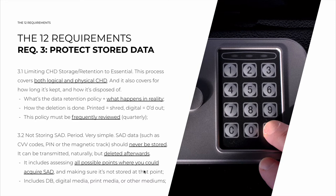So you have to show the assessor: this is where we store the card data in our website, and please note that we don't store it here. Here's the part of the flow where they pay and input the SAD, and we also don't store it at this juncture. You have to do that for every possible point — including storing it in the database, possibly showing it in digital media, printing it, or any other medium. You have to prove that for every situation where you could store this data, that you don't store it.